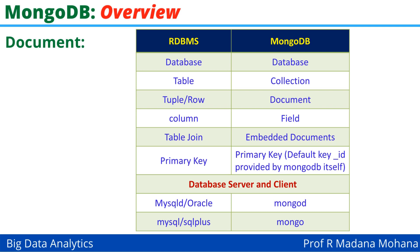In MongoDB, tuples or rows are denoted as documents. In RDBMS, columns are also called fields — the same term 'field' is used in MongoDB. In RDBMS, table join is used; the equivalent in MongoDB is embedded documents. In RDBMS, primary key is a key constraint; in MongoDB, the primary key is denoted as the default key underscore _id, provided by MongoDB itself.